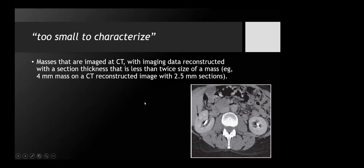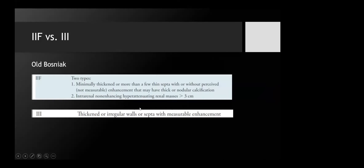Moving on to Bosniak 2F versus 3 — one of the most confusing categories to differentiate. In the old Bosniak classification, 2F was described as minimally thickened or more than a few thin septa with or without perceived enhancement, without providing any definition for these terms. One type — intrarenal non-enhancing hyperattenuating adrenal mass — has been removed, and the new Bosniak actually recommends further characterization with MRI. This is one of the indications to do MRI.